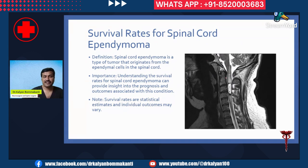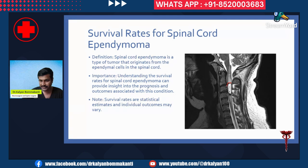A brief introduction. This is an example of spinal cord ependymoma. It is one of the most common tumors of the spinal cord, accounting for 40 to 60 percent of spinal cord tumors in adults and around 30 percent in children. They are intramedullary tumors that arise from ependymal cells within the central canal of the spinal cord. This is an example of ependymoma in the cervical region.